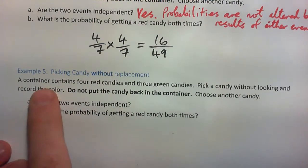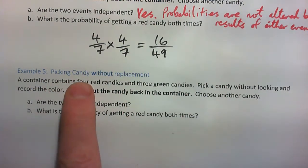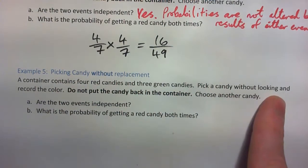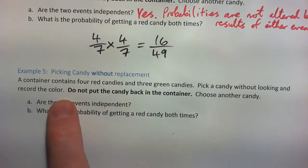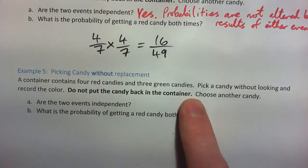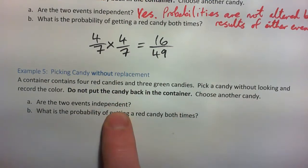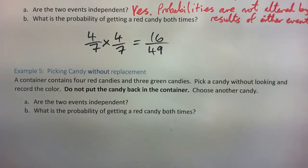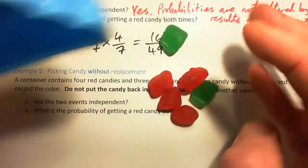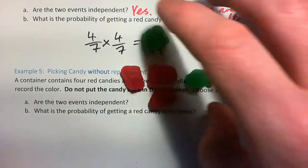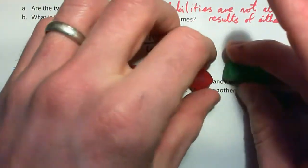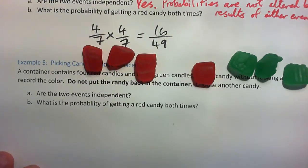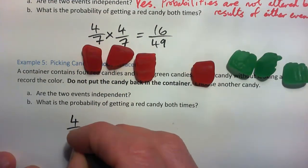Now example five, to compare. A container contains four red candies and three greens — same thing again. Pick a candy without looking and record the colour. Do not put the candy back in the container this time, then choose another candy. Are the two events independent? What's the probability of getting a red candy both times? The probability of getting a red the first time is four out of seven.